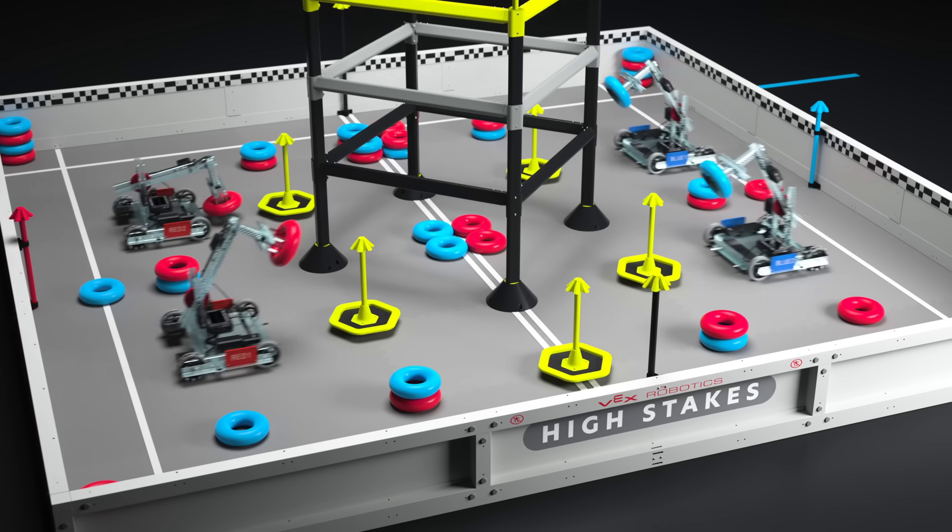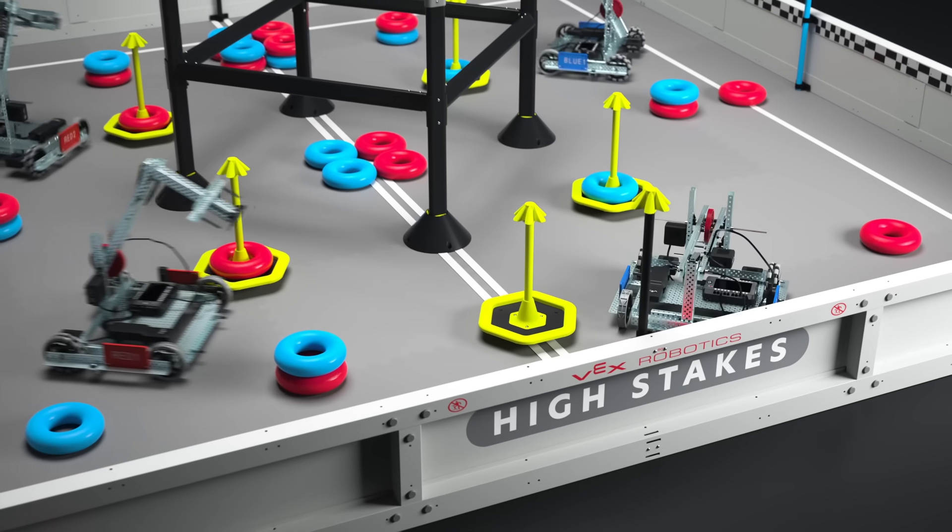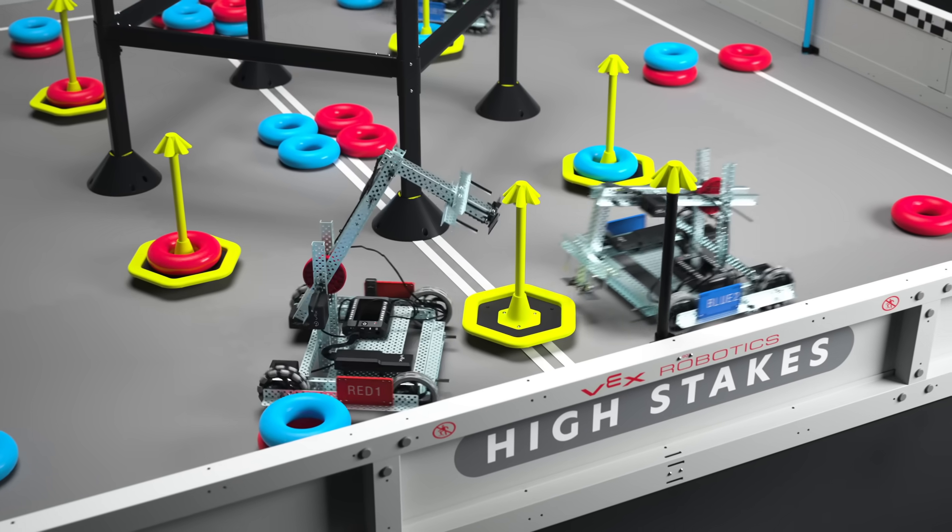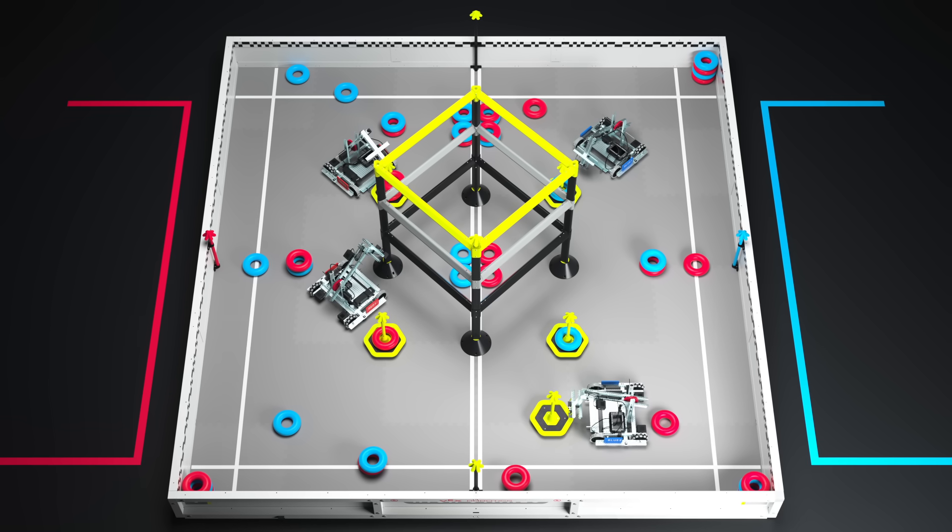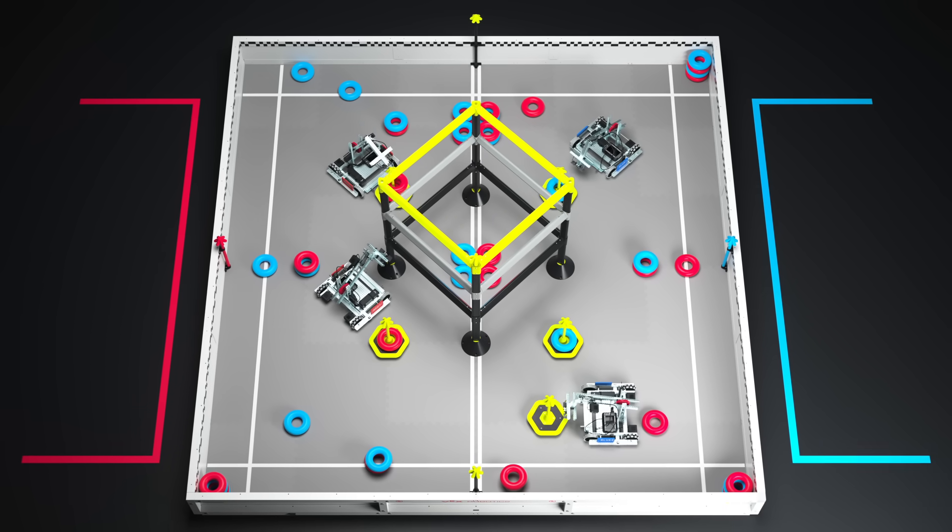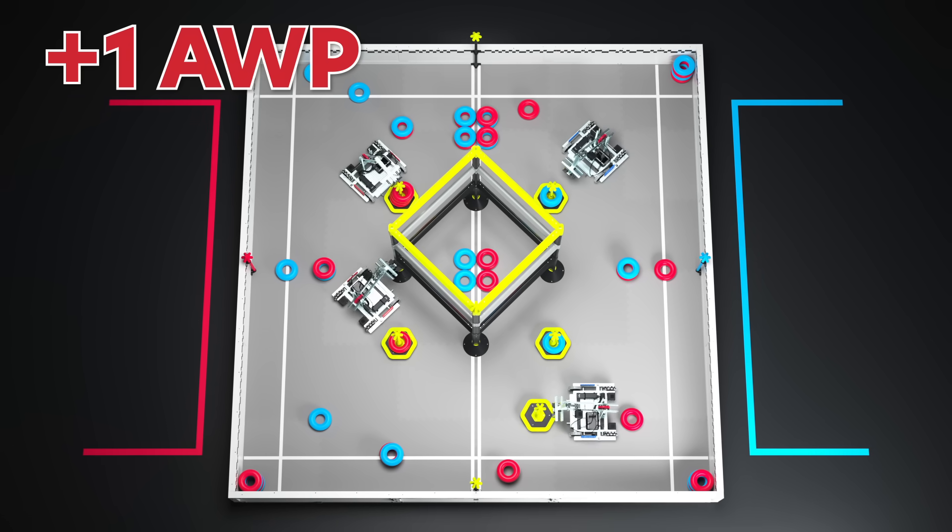Matches begin with a 15-second autonomous period where robots operate without input from their drivers. Robots begin with one ring as a preload and must stay on their side of the autonomous line. Alliances also have the opportunity to earn an autonomous win point by completing a certain set of tasks during the autonomous period.